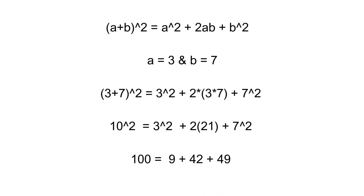Let's look at the formula again: a plus b whole square equals a squared plus two ab plus b squared. Now let's substitute a equal to three and b equal to seven. That is three plus seven whole square equals three squared plus two times three times seven plus seven squared. Solving further, both sides equal one hundred. But this is still not fully satisfying, right? Let's do it practically.